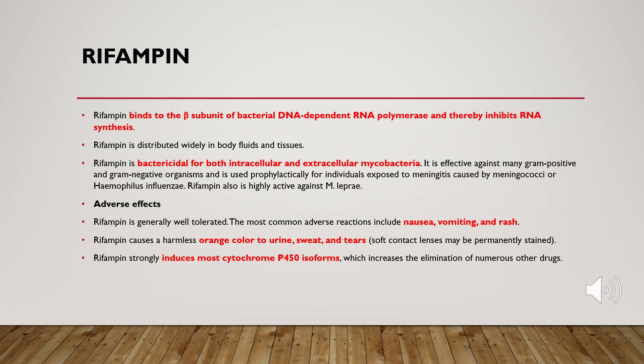Whether you have TB of the bladder, lungs, meninges, or bone, you can use rifampicin. Another advantage is that it is effective against both intracellular and extracellular mycobacteria — those residing inside cells as well as those found outside.